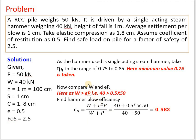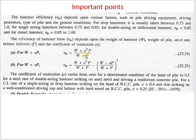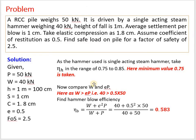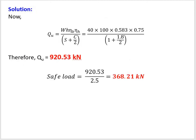To find ηb, compare W and eP: W = 40 kN, eP = 0.5 × 50 = 25. Since W (40) > eP (25), use the formula: ηb = (W + e²P) / (W + P) = (40 + 0.25 × 50) / (40 + 50) = (40 + 12.5) / 90 = 52.5 / 90 = 0.583.